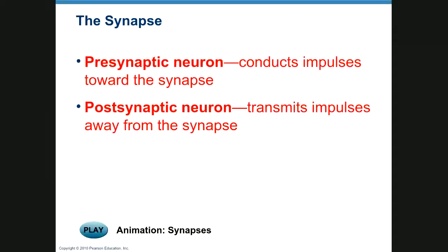We're going to cover the last part of Chapter 11 and Chapter 12. The last part of Chapter 11 talks about synapses, which are the places where neurons come together and transfer information from one neuron to another. There are pathways in which information is passed from one neuron to the next, whether sensory or motor.